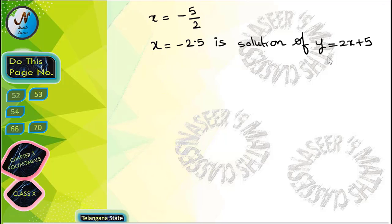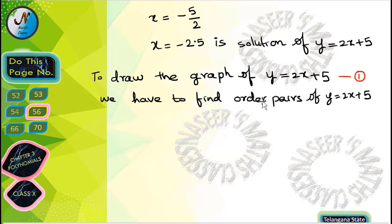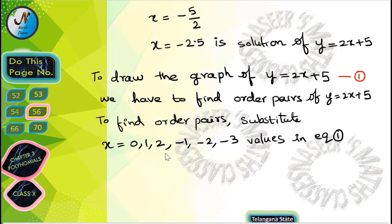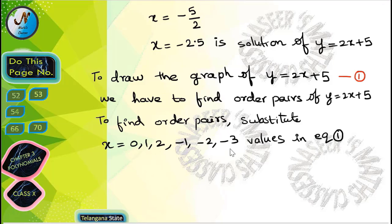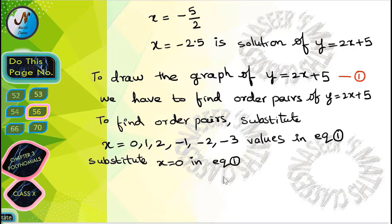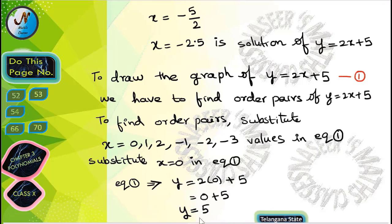The solution of y = 2x+5 is x = -2.5. To draw the graph we need to find the ordered pairs. We substitute x = 0, 1, 2, -1, -2, -3 in equation 1. We take values up to -3 because -2.5 falls between -2 and -3. Substituting x = 0 gives y = 2×0+5 = 5, so the ordered pair is (0, 5).